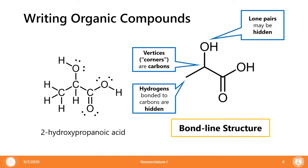That's why we use a bond line structure. In a bond line structure, the hydrogens are hidden and carbons are now reduced into vertices, corners, or edges. Lone pairs are also hidden. Heteroatoms like oxygen and nitrogen only show how many hydrogens they have.